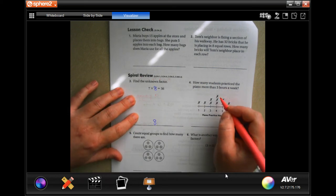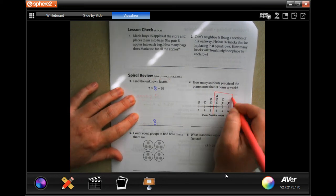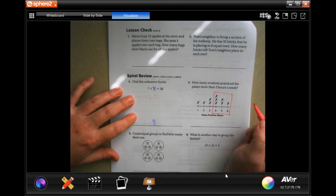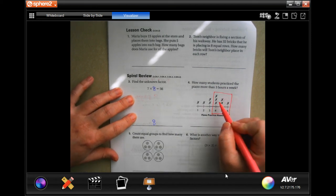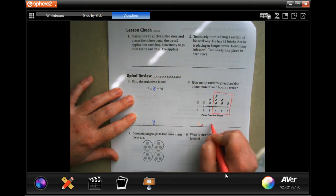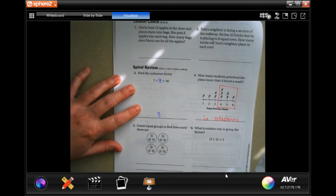More than three hours, that's these guys, not including three. So all we have to do is count the number of X's: one, two, three, four, five, and six. Six students. Word problems, word answer.